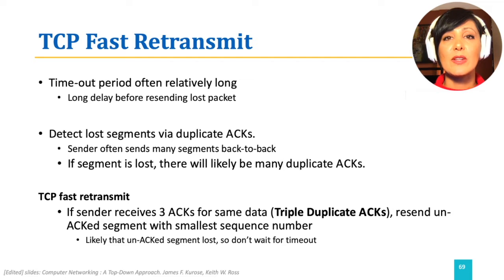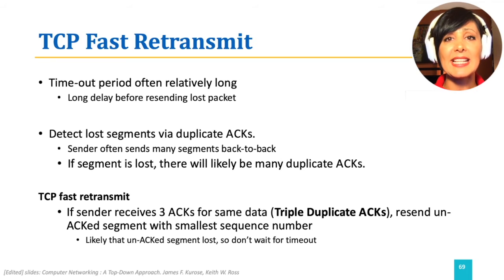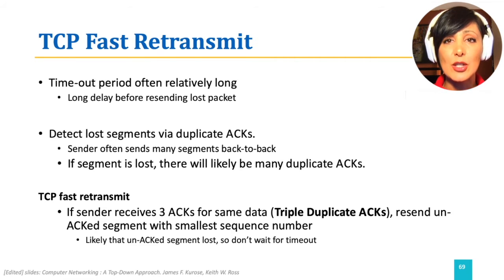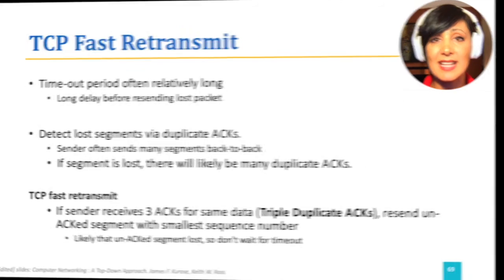If the sender receives three acknowledgements for the same data — an event called triple duplicate ACKs — it will resend the un-ACKed segment with the smallest sequence number. This is because triple duplicate ACKs are considered a sign of gaps existing in the receiver-side buffer, which might be due to lost segments.